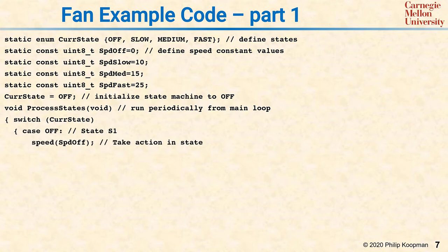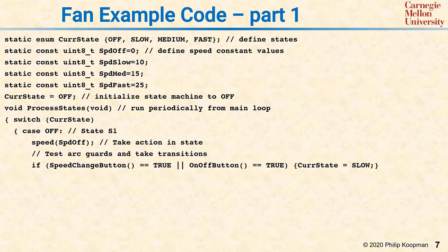The code switches on current state, which jumps it to the part of the code that deals with the state the system is currently in. And you can see case OFF is you're in the off state. And notice the comment, state S1. The reason we have a number is it makes it easy to look at it and say, oh yeah, this is the off state, and yes, we meant state one. There's no chance for mistake here. The first line does the side effect. It says, set the speed to SPEED_OFF. Then the code looks at the arc guards and decides which guards are true. If speed button is true or on-off button is true, then the current state is slow. That line of code tests the guard conditions on the output arc from off and sets cur_state to a new state.